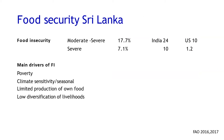The accounts on food security in Sri Lanka — from FAO analysis using the FIES tool — indicate that severe food insecurity is 7.1% and moderate to severe is 17.7%. You can see our position compared to the US and India. The main drivers of food insecurity in Sri Lanka are known to be poverty, climate sensitivity or seasonal patterns, limited production of own food, and low diversification of livelihoods.